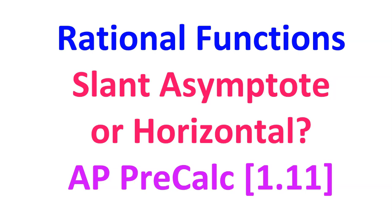In this video we will practice deciding whether a rational function has a slant asymptote, a horizontal asymptote, or neither. If it's a slant asymptote, we'll find it. This is AP Precalculus topic 1.11.